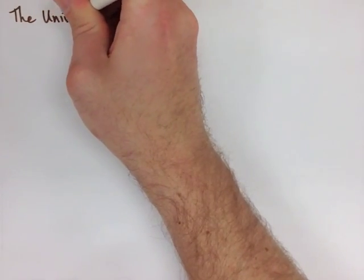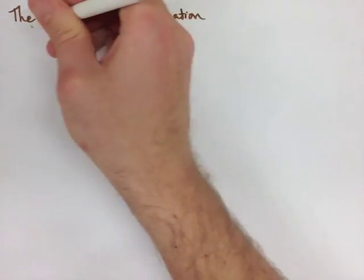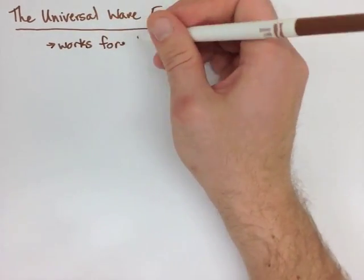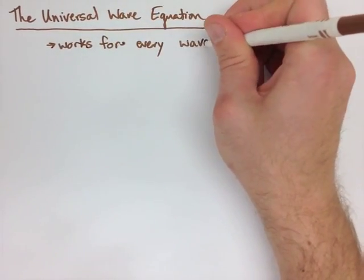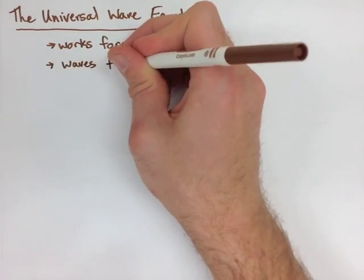Finally, we're going to look at the universal wave equation. This equation works for every wave. It also works only when we have constant velocity, which is good because our waves are all going to travel at constant velocity.